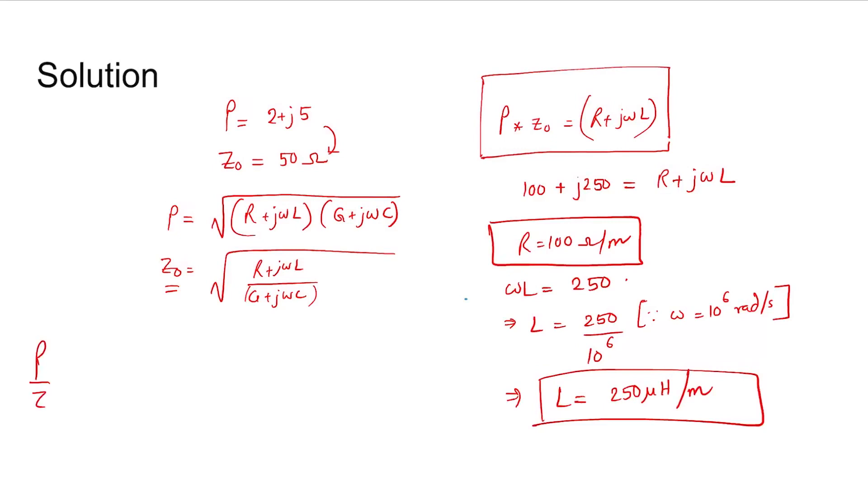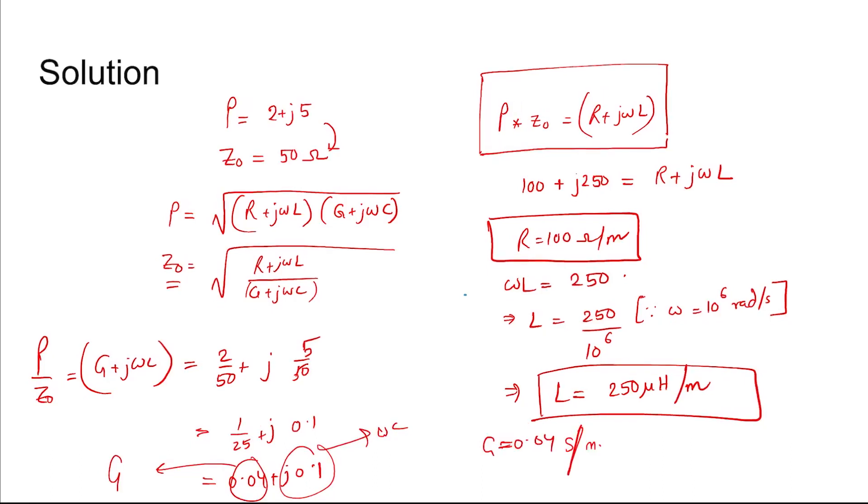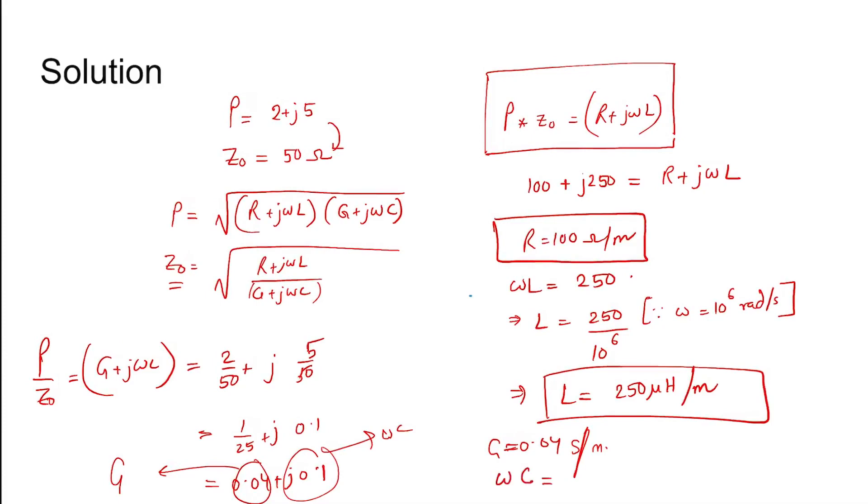Now P/Z₀ = G + jωC, which equals 2/50 + j(5/50) = 1/25 + j0.1 = 0.04 + j0.1. So G = 0.04 S/m and ωC = 0.1, giving C = 0.1 μF/m. These two are also determined.